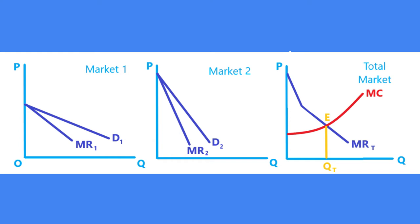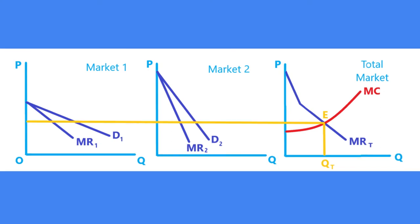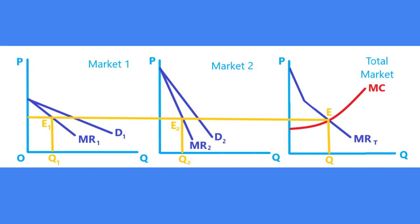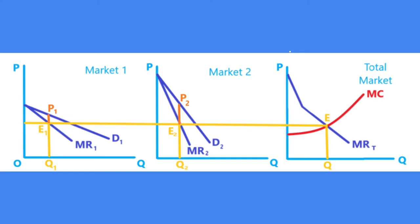The equilibrium level of output is where the monopoly firm earns the maximum amount of profit. The monopolist divides this output between the two markets by equating the marginal cost with the marginal revenue of each market. To equate MC with MR1 and MR2, we draw a line parallel to the horizontal axis. It cuts MR1 at E1 in market 1 and the output is OQ1, and in market 2 it is OQ2, so OQ1 plus OQ2 equals the total market output OQT. Prices are fixed where the profit maximizing output is extended to the demand curve, and the price in market 1 is lower than market 2 because of higher elasticity of demand.